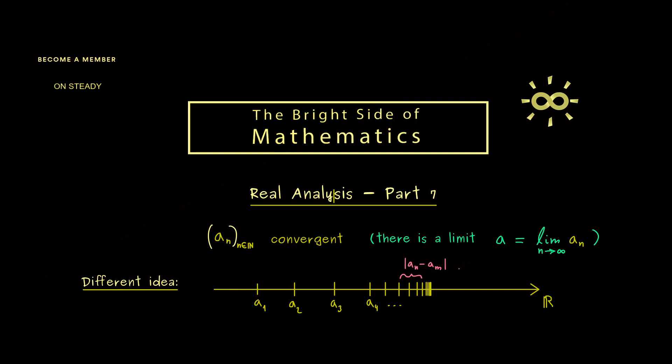Which is the absolute value of a_n minus a_m. And then this should be less than epsilon we choose at the beginning. Therefore the formal way then reads for all epsilon greater 0 we find a capital N. Such that for all indices called N and M afterwards we have that the distance between the sequence members is less than epsilon. And now a sequence with this property we call a Cauchy sequence.